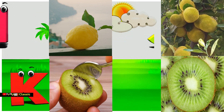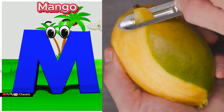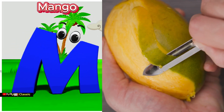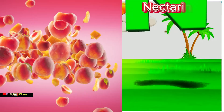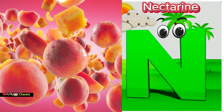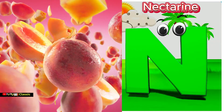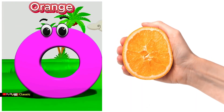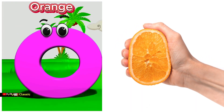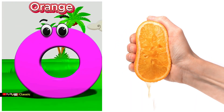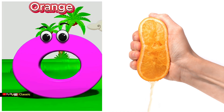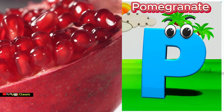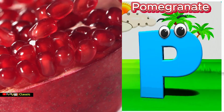M is for mango, ma-ma-mango. N is for nectarine, n-n-n-nectarine. O is for orange, o-o-orange. P is for pomegranate, p-p-pomegranate.